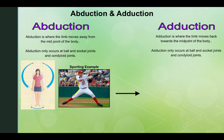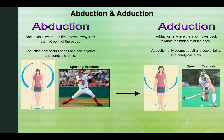Adduction is where the limb moves back towards the midpoint of the body. Adduction only occurs at a ball and socket joint and condyloid joints. Here you can see the arms move towards the hips as they adduct. A sporting example of this would be shooting in hockey — as the arms come towards the midpoint, the arms adduct and the player is able to hit the ball.